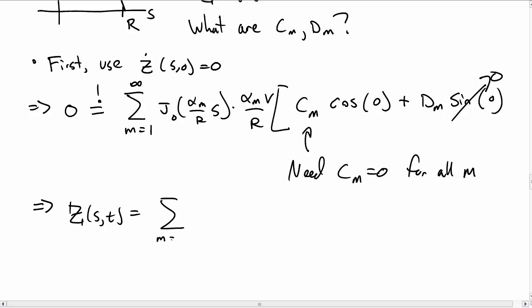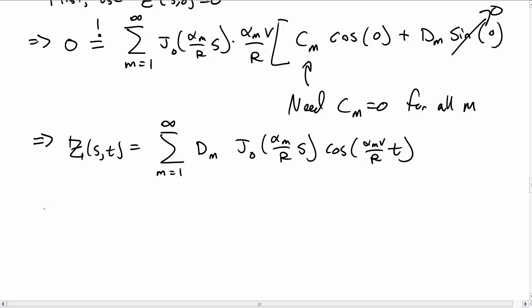So our function for z as a function of s and t now simplifies to d sub m, the 0th Bessel function j 0 alpha m over r s, then cosine of alpha m v over r times t. So this doesn't look too bad.